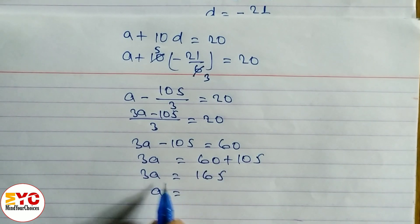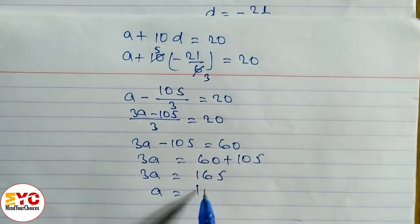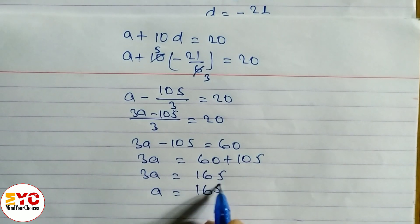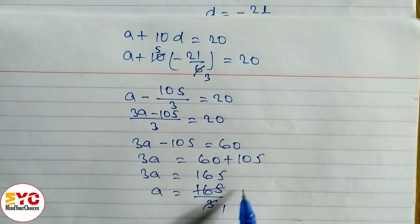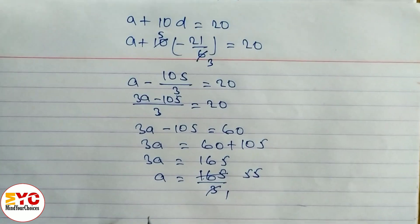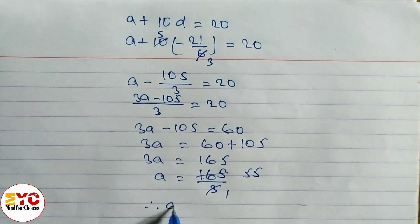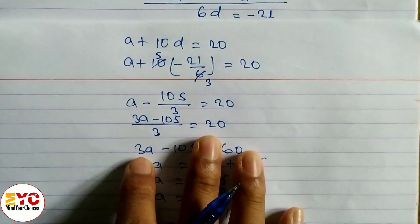So A equals 165 divided by 3. Dividing: 3 ones are 3, 3 fives are 15, 3 fives are 15. Therefore the value of A is equal to 55.